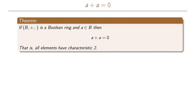We will now look at two specific theorems that hold for all Boolean rings. The first theorem says the following: if we have a Boolean ring with set of elements B and addition and multiplication operations, and if a is an element in the Boolean ring, then we always have that a plus a equals zero. Another way of saying this is that all elements have characteristic two.